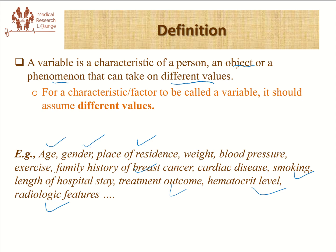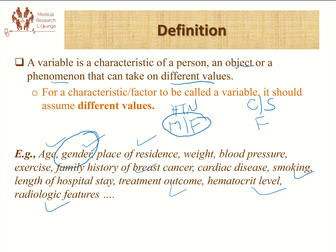For example, let's take gender. If we are studying the prevalence of hypertension in a tertiary hospital, then we are automatically going to have a male and female population. But if we're studying the prevalence of cesarean section in a tertiary hospital, then our entire population is going to be female. So in the first study, gender can be treated as a variable, but in the second research, gender is not a variable because it's a homogeneous population.